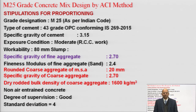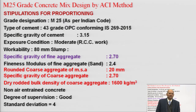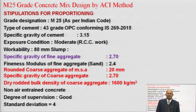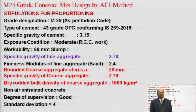For type of cement, I am taking 43-grade cement. In the American standard they have Type 1, Type 2, Type 3 cement. Here we will be considering Ordinary Portland Cement — 43 grade. You also have to do testing for specific gravity of cement. Then you have to consider exposure conditions — there are 5 types: mild, moderate, severe, very severe, and extreme.